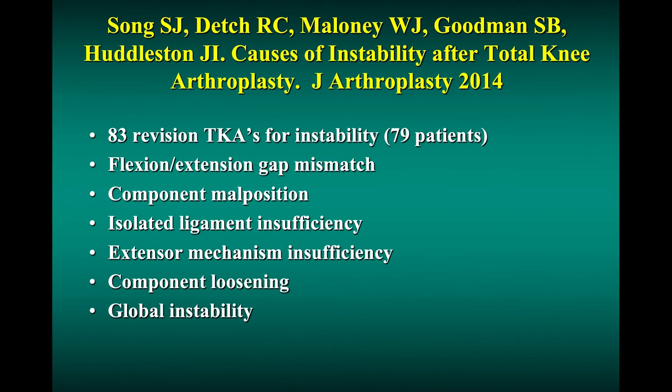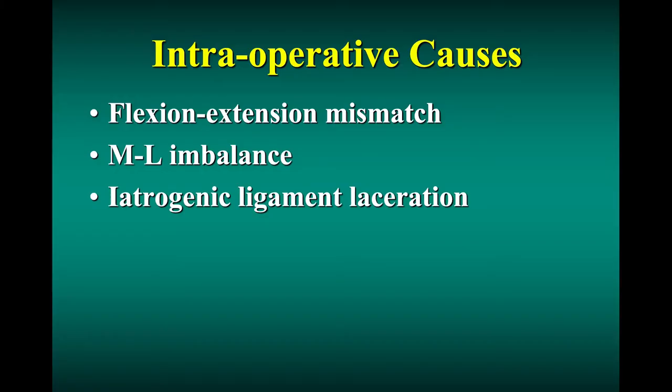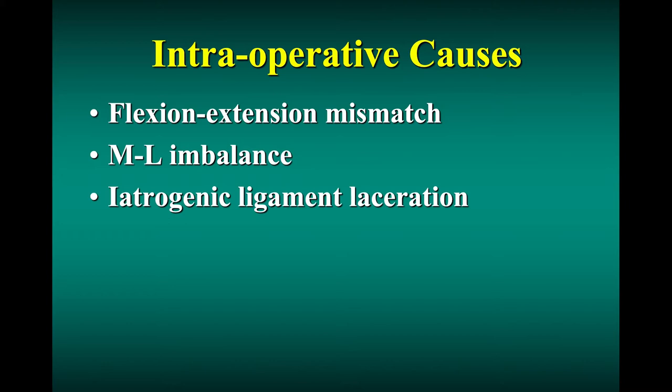Despite that, flexion instability has been recognized as a clinical entity commonly resulting in revision. There can be a number of reasons for this — this publication from Stanford showing that out of 83 revisions, causes included flexion-extension mismatch, component malpositions, isolated ligament insufficiency, as well as loosening and wear. Loosening and wear are different because that causes more bone loss, creating a bigger gap, as opposed to a direct effect on the ligaments. Intraoperative instability can occur if you can't balance those gaps at 0 and 90 degrees, or if there's a medial-lateral mismatch from a varus or valgus deformity, or once in a while an iatrogenic mishap occurs during surgery.